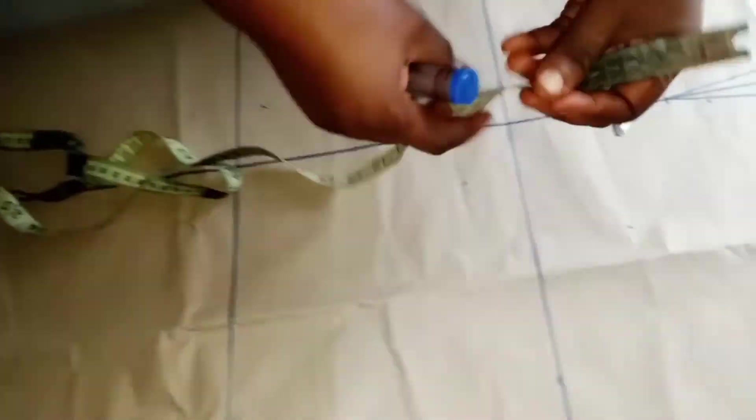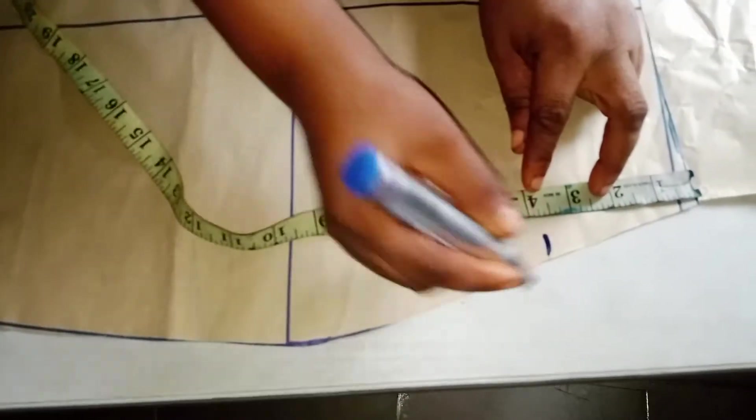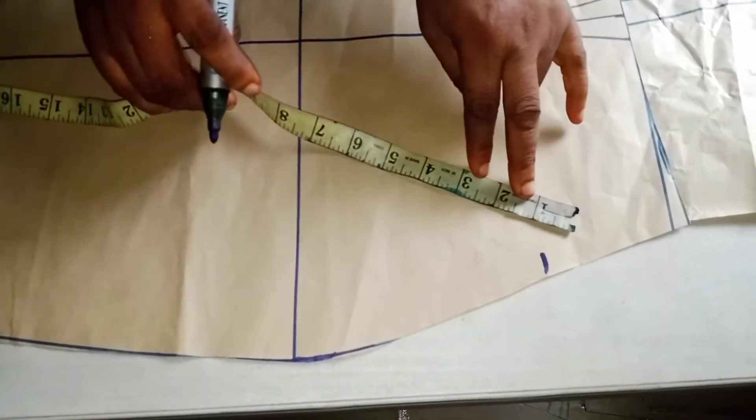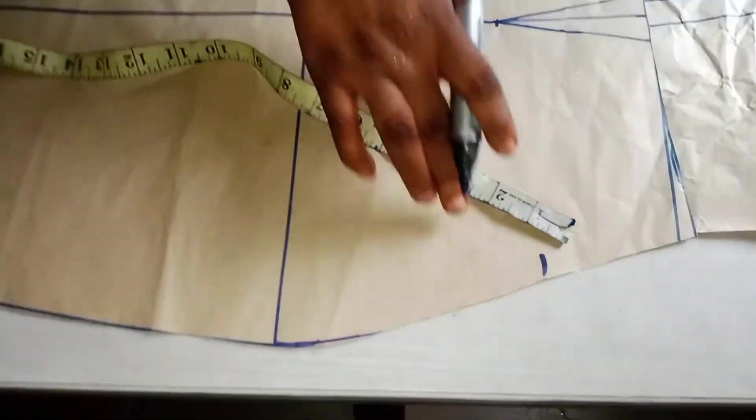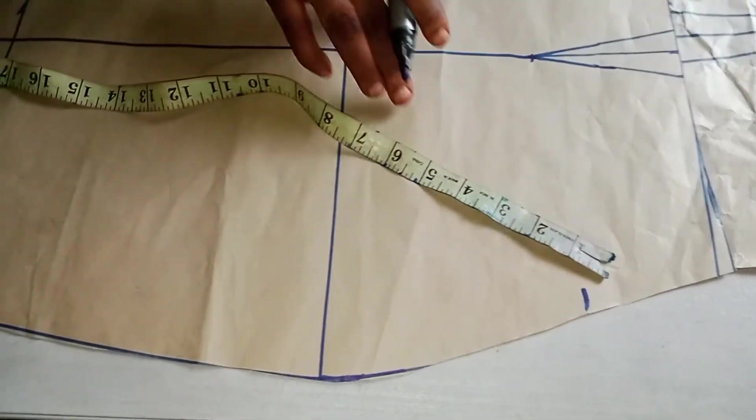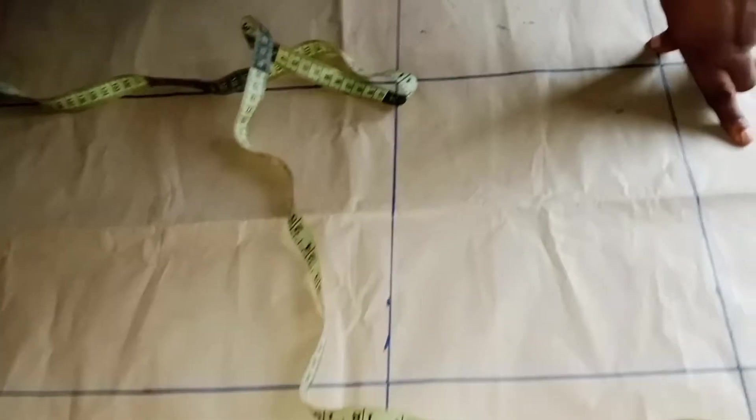I'll measure from the waist and come down by four inches. Then from the four inches, I will take the zigzag flounce to the length of this gown.